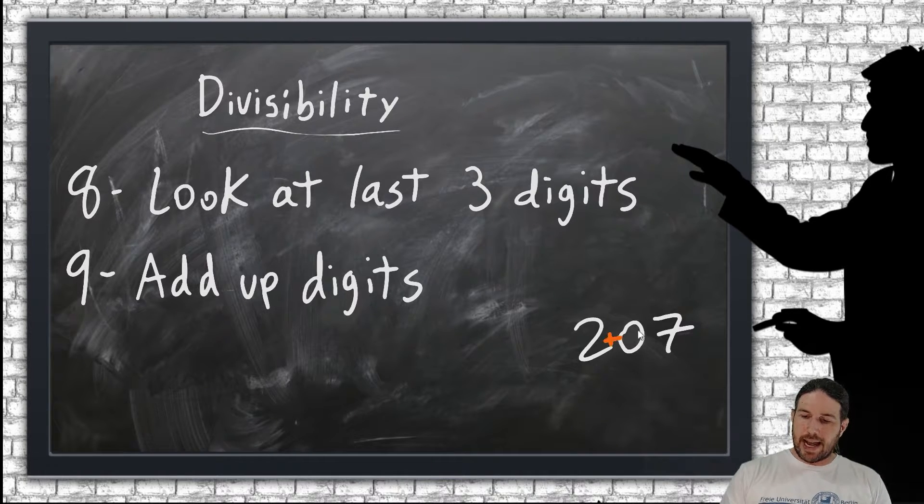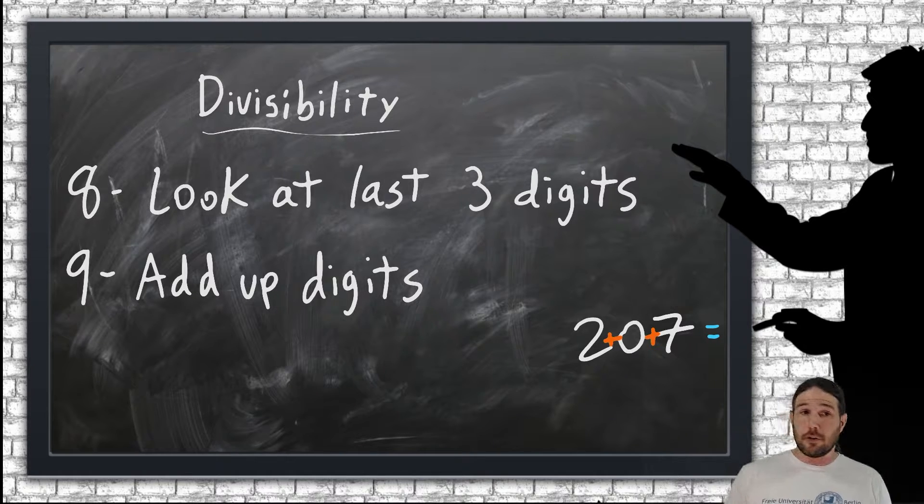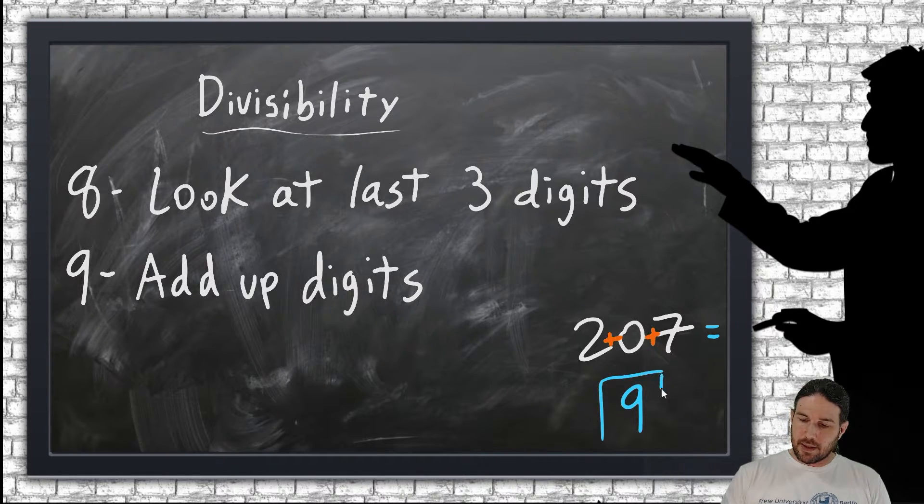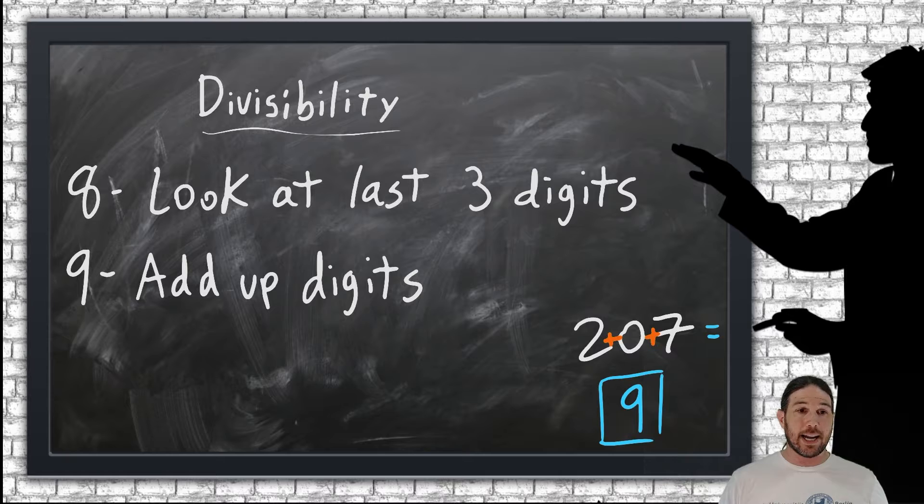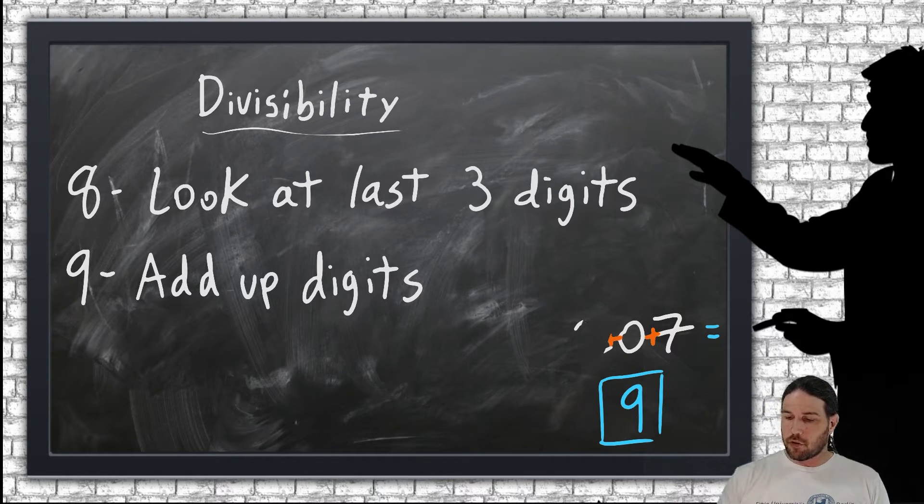again, I can add the digits up. 2 plus 0 is 2, plus 7 is 9. And yes, that is a multiple of 9, so 207 is also divisible by 9. Also by 3. Both things are true.